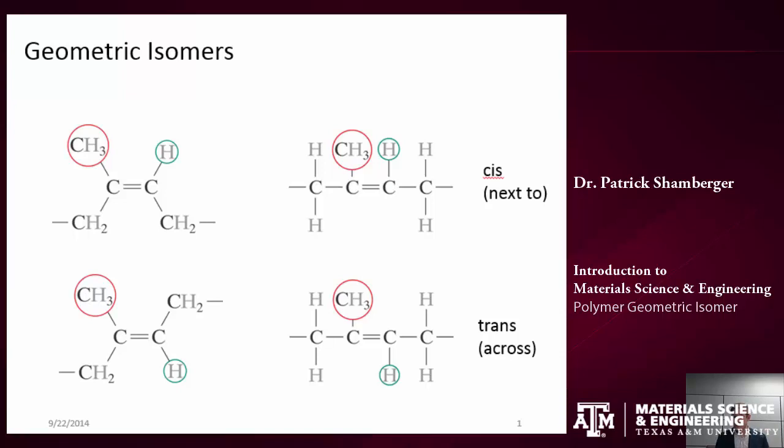Geometric isomers are referring to different unique arrangements of side groups within an individual repeat unit. So, let's look at an example of some of these.